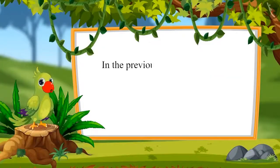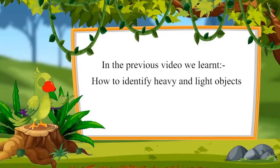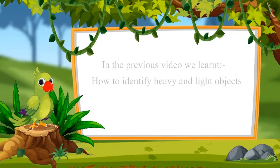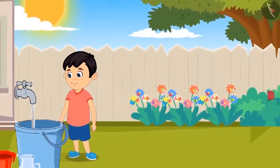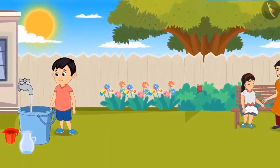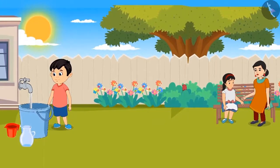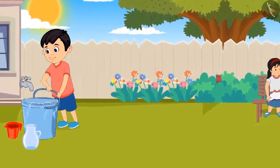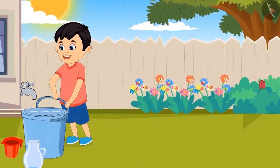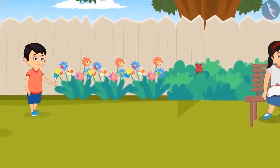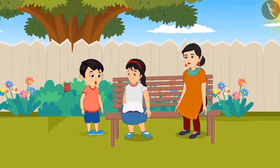Hello children. In the previous video, we learned how to identify heavy and light objects. In this video, we will learn how to identify the heaviest and lightest objects. Today, Chotu has to water the plants. He is filling water in a bucket, but after filling it, Chotu was not able to lift it. He says, 'I am not able to lift the bucket. What do I do now? Let me ask Pinky.' Pinky tells him, 'The bucket of water is heavy. You will not be able to lift it. You can get water in a jug.'